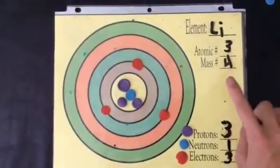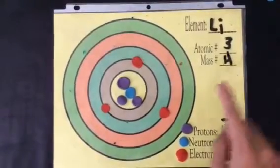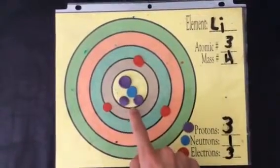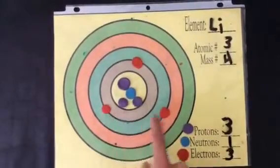Lithium-4 has an atomic number of 3, mass of 4, and has 3 protons, 1 neutron, and 3 electrons.